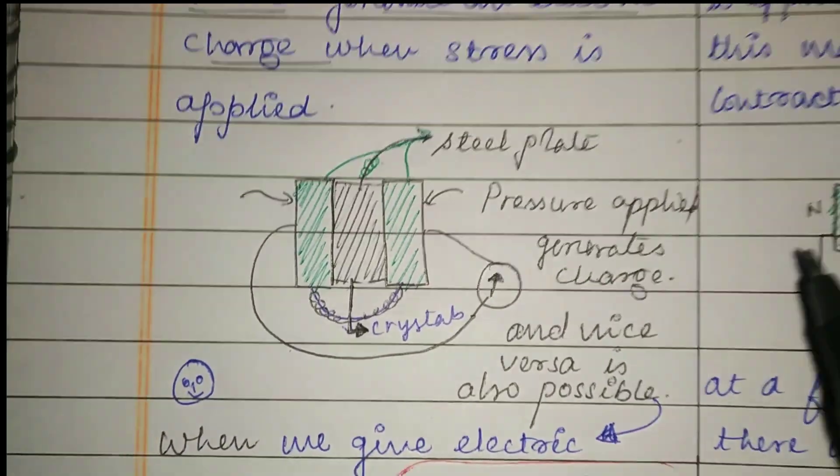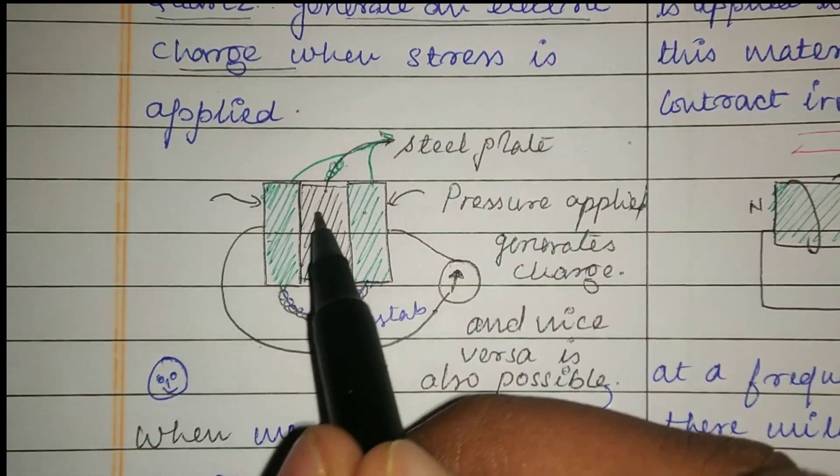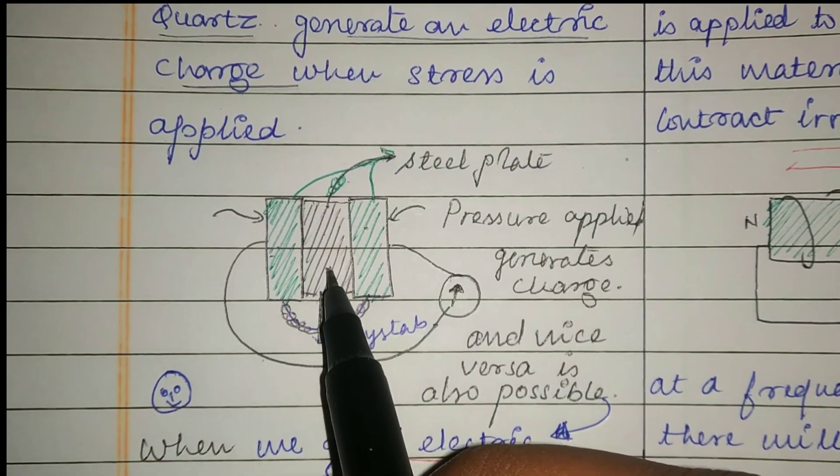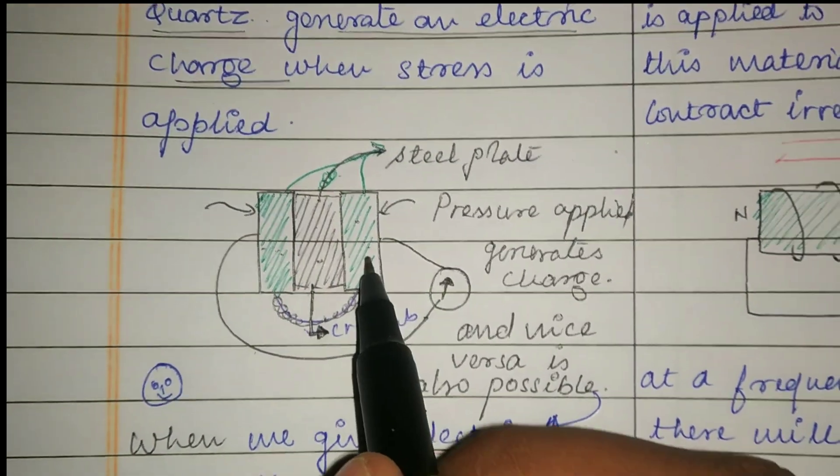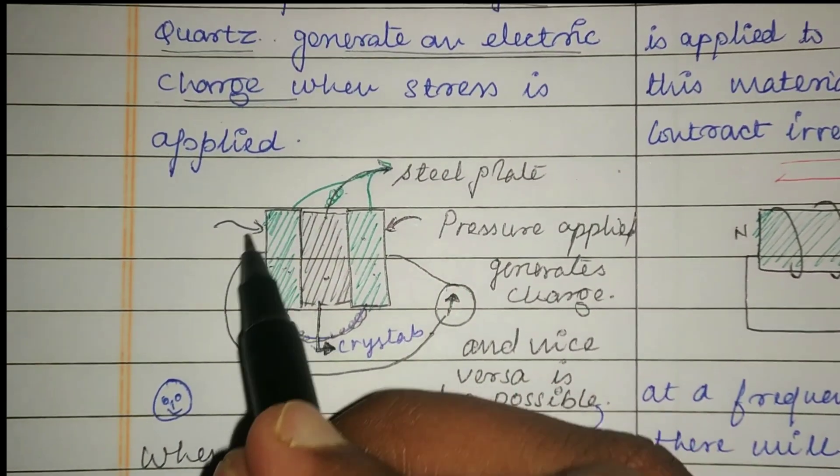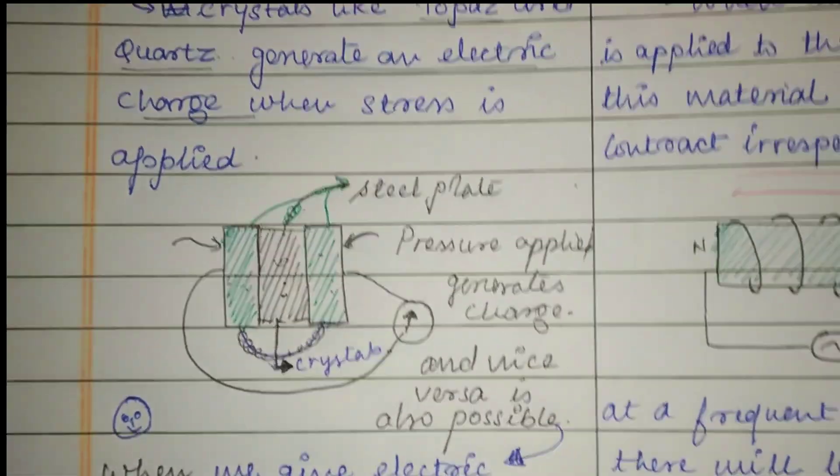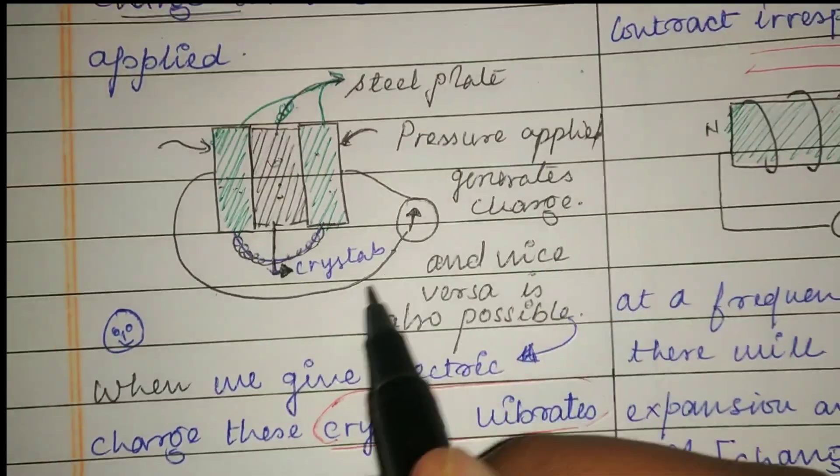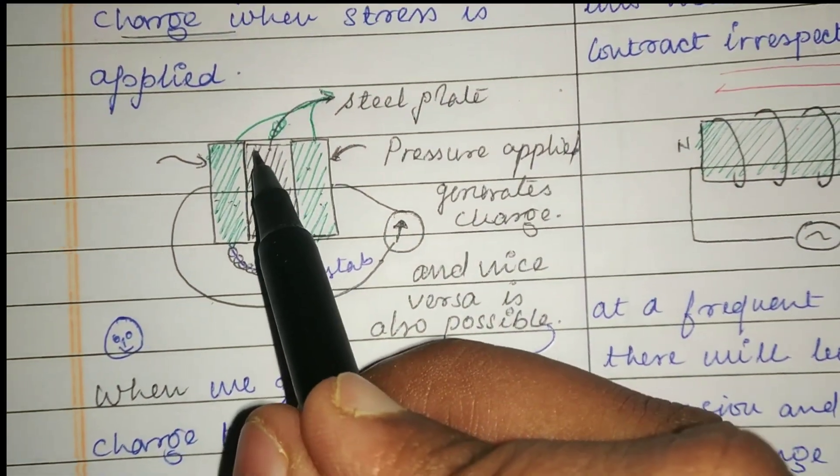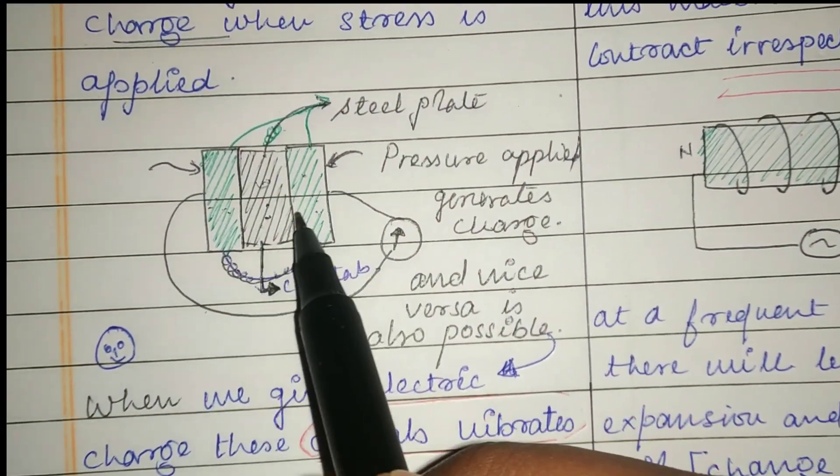Let's understand the principle. These are two steel plates and the crystal is sandwiched between them. Whenever pressure is applied to the steel plates, it presses the crystal and charge is generated. Vice versa is also possible - when we give electric charge to the crystal, it starts vibrating. This is the piezoelectric effect.